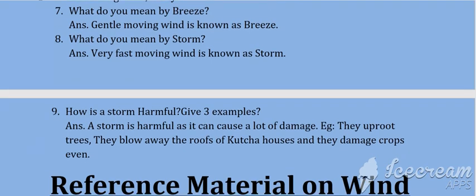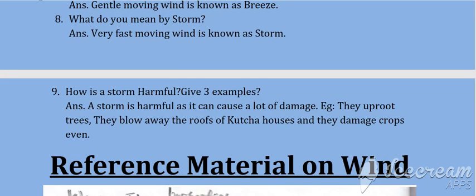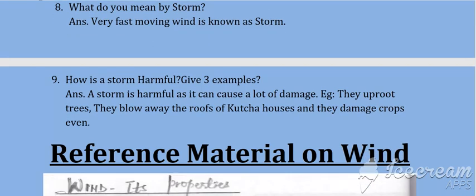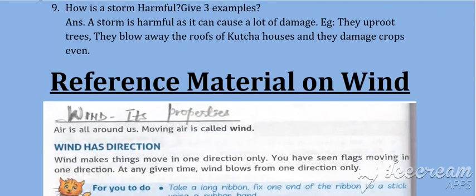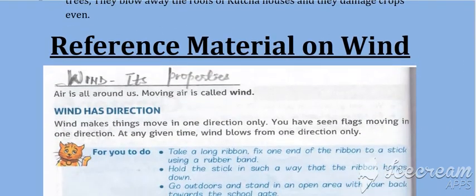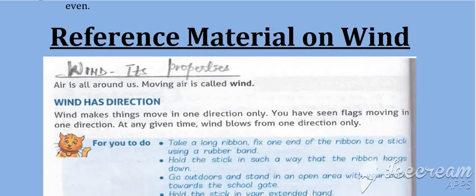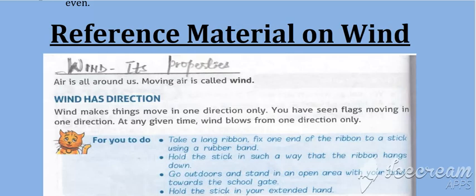Now we will see the reference material on the chapter wind. You can go through wind and its properties. Wind has direction. Wind makes things move in one direction only. You have seen flags moving in one direction. At any given time, wind blows from one direction only.